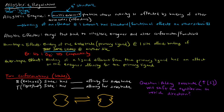Because binding of oxygen — which is the primary ligand for hemoglobin — at one site affects the binding of that same ligand, oxygen, at other sites. So binding of oxygen at one site increases the affinity for oxygen at those other three sites.